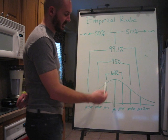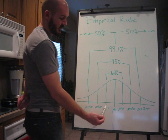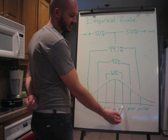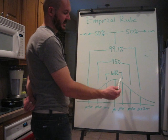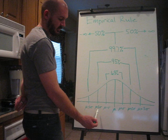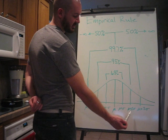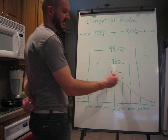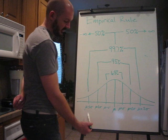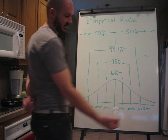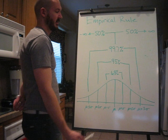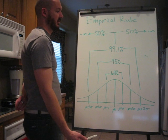The empirical rule states that between mu minus one standard deviation to mu plus one standard deviation includes 68% of your curve. From mu minus two to mu plus two standard deviations contains 95% of your curve. And for three standard deviations left and three standard deviations right, it includes 99.7% of your curve.